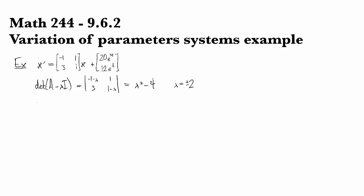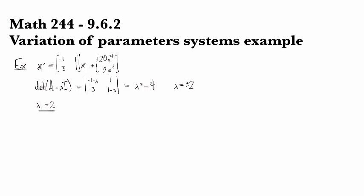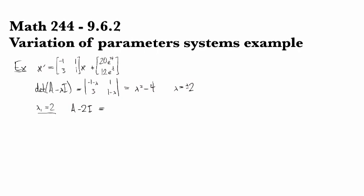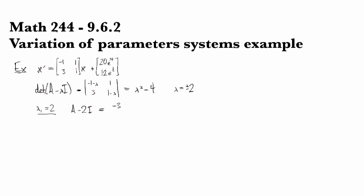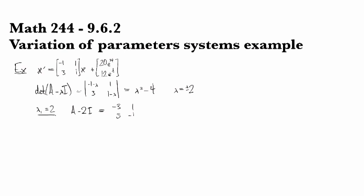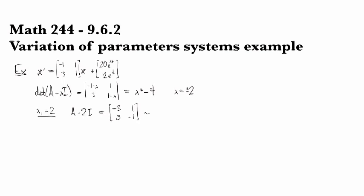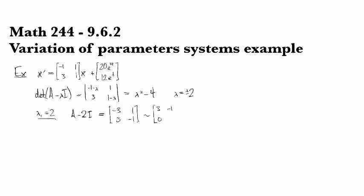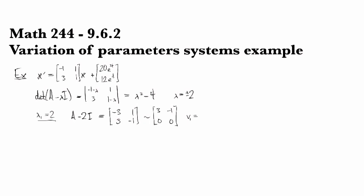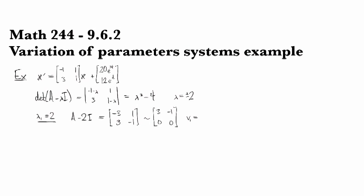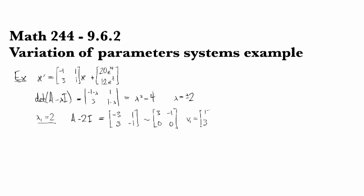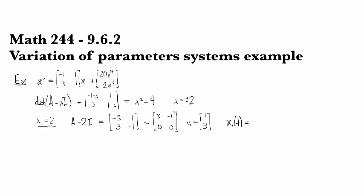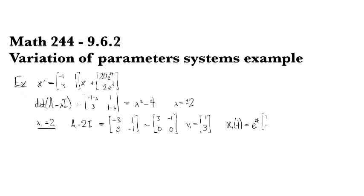Going for the eigenvectors, let's take λ₁ equal to 2. Then A minus 2I gives us negative 3, 1, 3, minus 1, which immediately row reduces to 3, minus 1, 0, 0. We have an eigenvector of 1, 3, and so we get part of our solution as e to the 2t times the vector 1, 3.